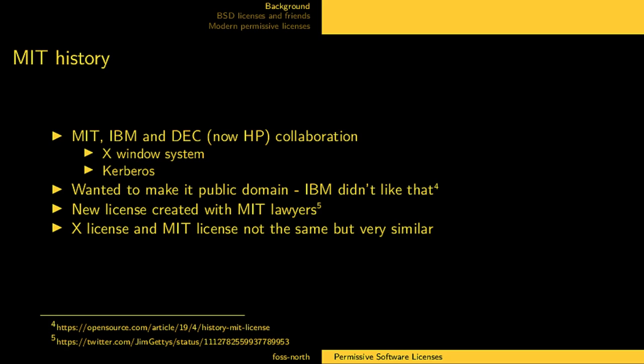There's some confusion on what to call these licenses — is it the X license or the MIT license? They're not exactly the same, but they are very similar. The problem was actually that IBM couldn't use the outcome if it was in the public domain; they needed to be able to officially license it. One of the original authors of the X Window System mentioned in a Twitter thread that IBM said they couldn't work with something not under a specific license, though he didn't really mention why.